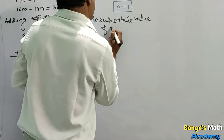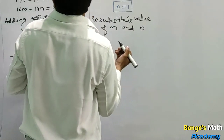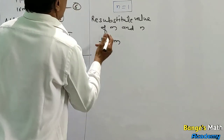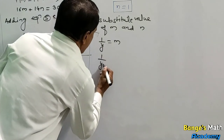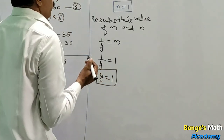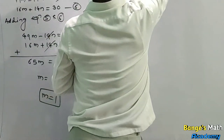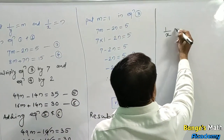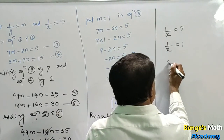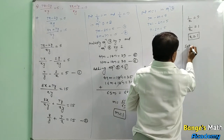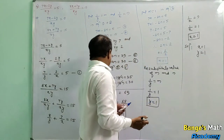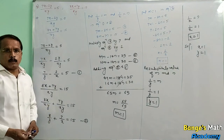Re-substitute values of m and n. Since 1 upon y equals m equals 1, by cross multiplication y equals 1. Since 1 upon x equals n equals 1, by cross multiplication x equals 1. The solution is x equal to 1 and y equal to 1.